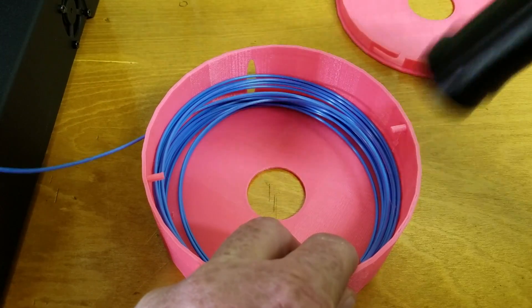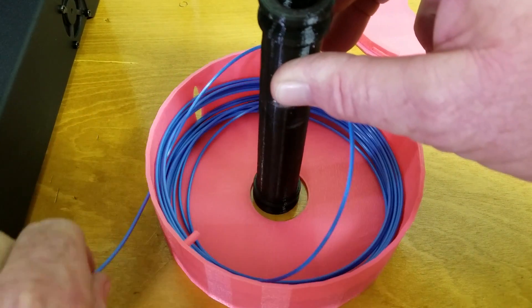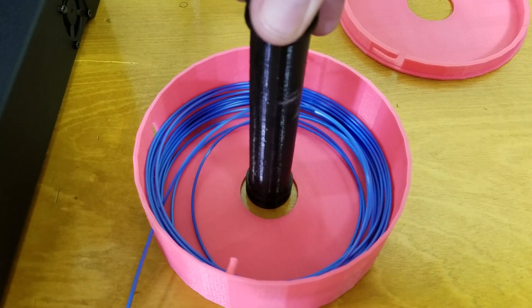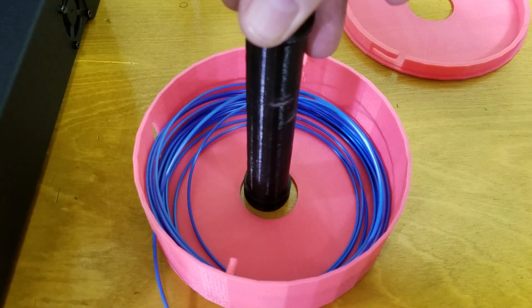And then with my spool holder, I've got it set up so that, that piece fits, the axle fits through the middle of it, so as it's being drug across that axle, it just kind of unspools the filament.